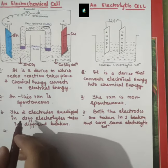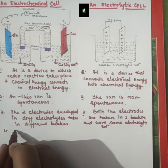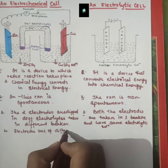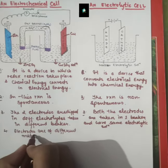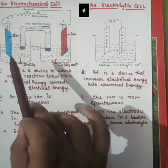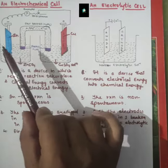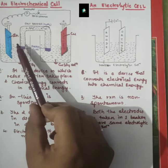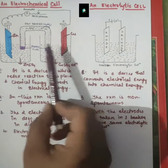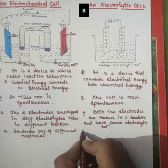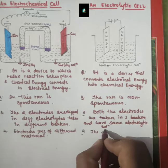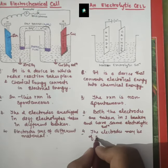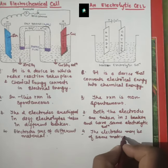The fourth difference: in the electrochemical cell, the electrodes are of different material. As you can see, the anode is zinc and the cathode is copper — two different materials. In the electrolytic cell, the electrodes may be of the same material or different material.